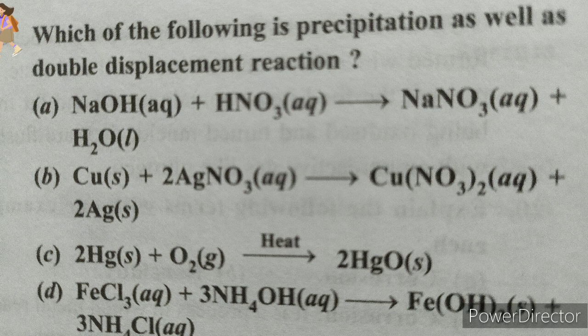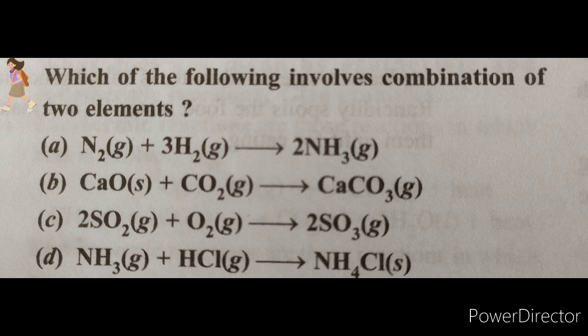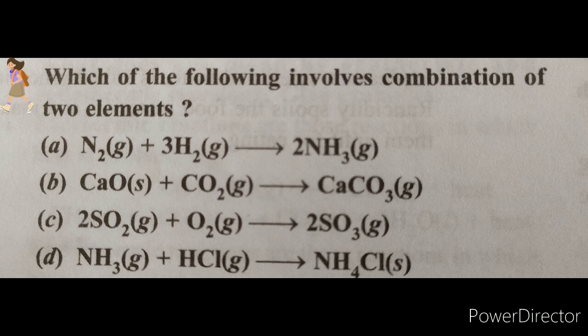The next question: Which of the following involves combination of two elements? Nitrogen plus hydrogen gives ammonia, calcium oxide plus carbon dioxide forms calcium carbonate, sulfur dioxide plus oxygen to form sulfur trioxide, ammonia plus hydrochloric acid gives ammonium chloride. The clue is given in this question itself.